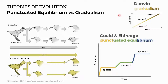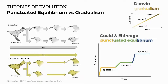Darwin's idea of gradualism involved slow changes over long periods of time and predicted transitional fossils in between before the appearance of each new species. Evidence from the fossil record, however, does not always support this idea. Transitional fossils are often rare, considering the enormous number of species evident in the fossil record, whether extinct past species or extant present species. The lack of transitional fossils led Gould and Eldridge to propose their theory of punctuated equilibrium.